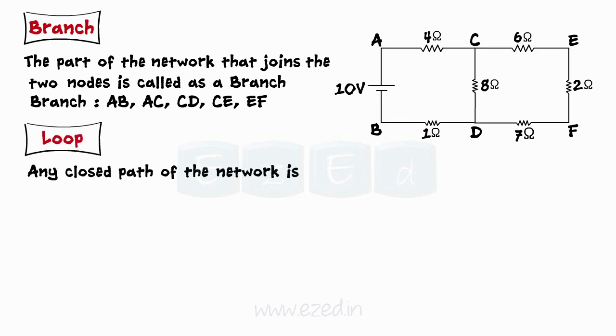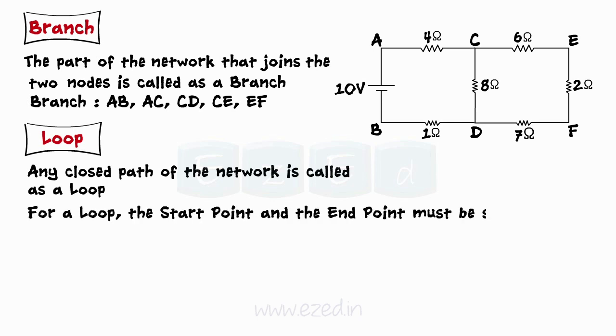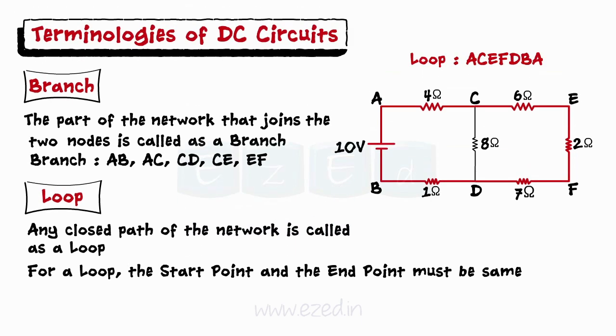Any closed path of the network is called as a loop. A path is set to be closed only when the starting point and the end point are same. So, in our circuit, ACEFDB A forms a loop. If we represent it as ACEFDB only then we don't get a BA branch and the circuit remains open. Thus, for every loop, the starting point and the end point are the same.